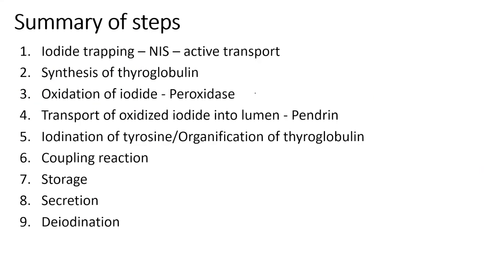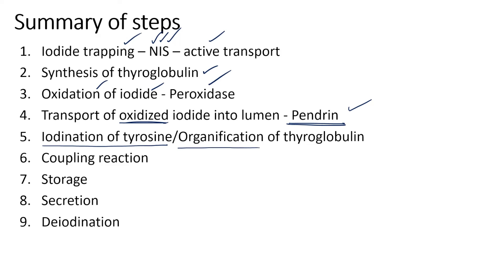To summarize: Step one is iodide trapping — iodide from circulation enters the follicular epithelial cell via the sodium-iodide symporter, an active transport process. Step two is synthesis and transportation of thyroglobulin from the cell into the lumen. Step three involves oxidation of iodide by peroxidase and transportation of the oxidized iodide into the lumen via pendrin. Once both iodine and thyroglobulin are in the lumen, iodination of the tyrosine — also called organification of thyroglobulin — occurs, forming MIT and DIT.